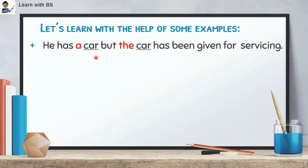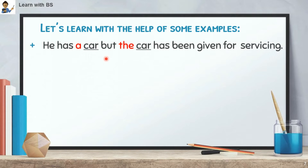Example 1: 'He has a car, but the car has been given for servicing.' Here, 'car' is the noun. The words that come before it are 'a' and 'the' — marked in red. So 'a' and 'the' are determiners. What type? They are Articles.